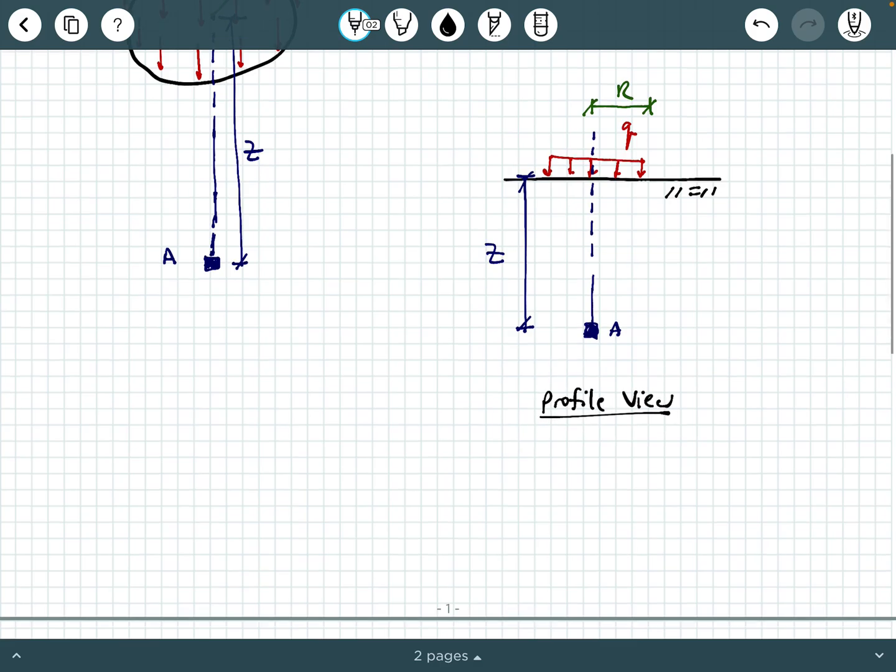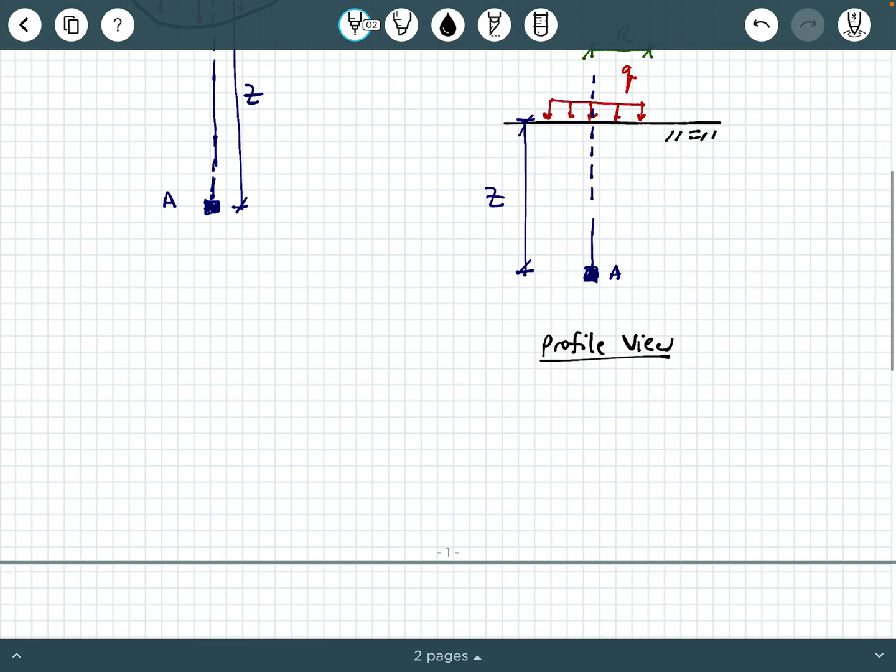And then a top view, if you wanted to draw a top view of this looking down on it, you're going to have this circle. That's maybe not the best circle I've ever drawn. And here is your radius R and your force or your stress that's being applied to the circular area is this stress distribution. So these little Xs kind of represent that set of stress vectors going into the screen at us.